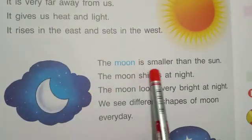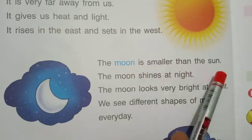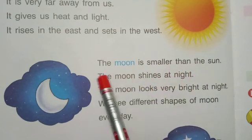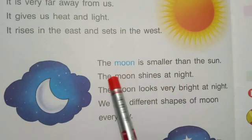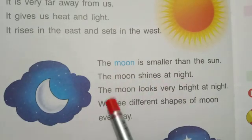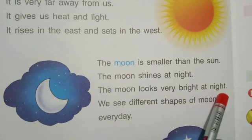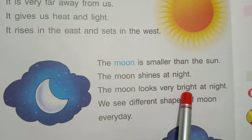Moon. The moon is smaller than the sun. Moon, sun से small होता है, उससे छोटा होता है. The moon shines at night. Moon night में shine करता है. The moon looks very bright at night. Moon night में बहुत bright दिखता है. हम moon को night में ही देखते हैं, दिन में नहीं दिखाई देता है.